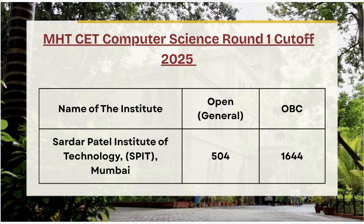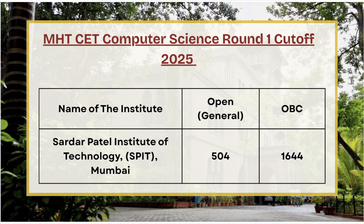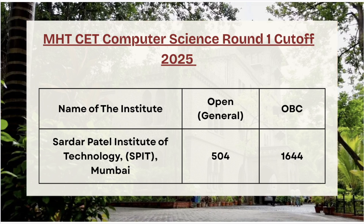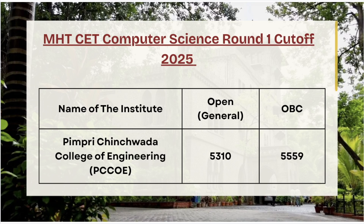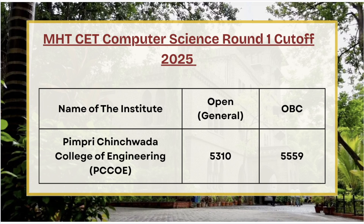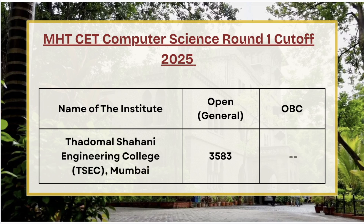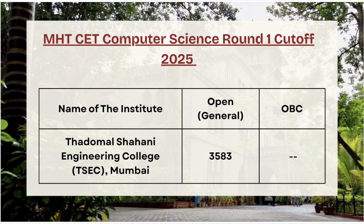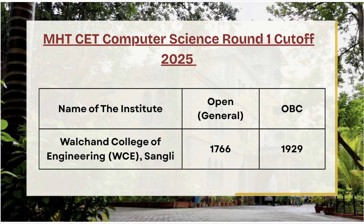Next we have Sardar Patel Institute of Technology. For open category the cutoff rank is 504, and for OBC category the cutoff rank is 1644. Next we have PCC OE Pune — open category cutoff rank is 5310, OBC cutoff rank is 5559. Next, TCC Mumbai — open category cutoff rank is 3583.